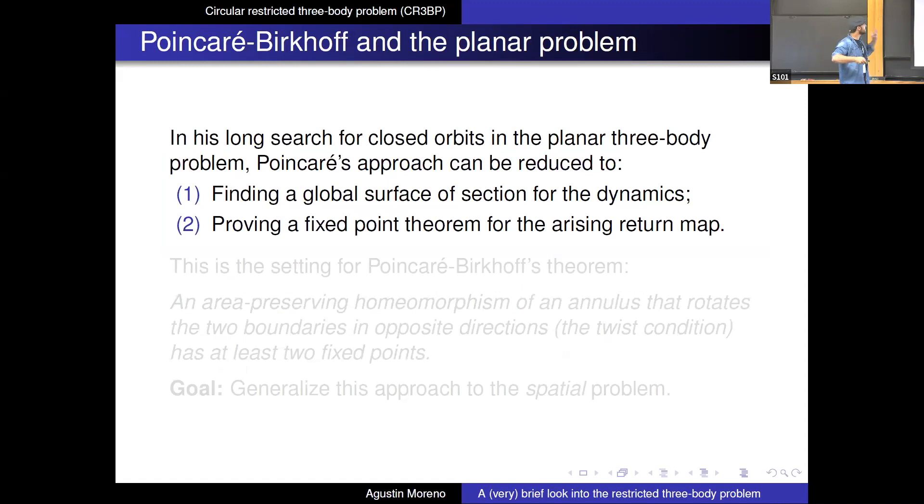So this is some dynamical systems. Already people like Poincaré told us that the first thing that you would like to try to do is try to understand critical points or sort of close orbits, right? So in that direction, Poincaré was trying to find close orbits in the planar problem and his approach, roughly speaking, maybe reduce the two steps, right?